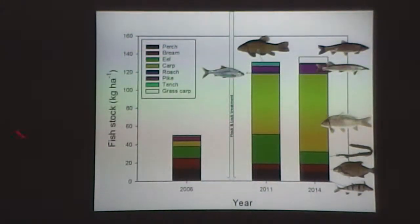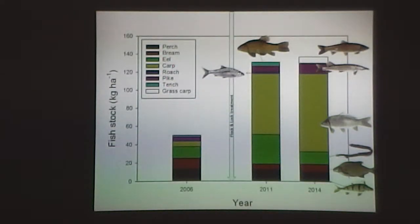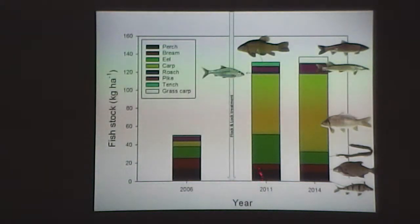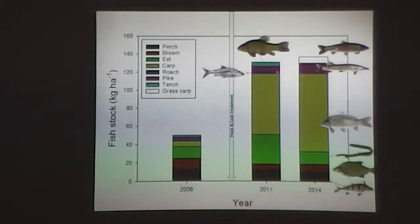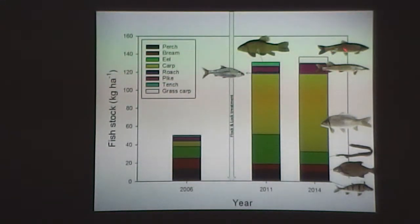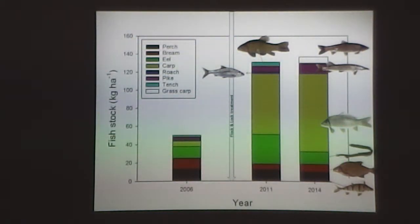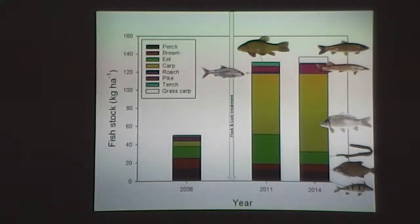Then about fish: we have a fish stock measurement before application with different species. After application we found much higher densities of pike, and we were happy to see higher densities of perch — these are visually-hunting predators. We were also surprised to see grass carp and carp of large size. We just had a chance with the fishing community there — they said the lake is much more attractive now. So they decided to stock it with carp, and that's a side effect: we made the lake much more appealing.